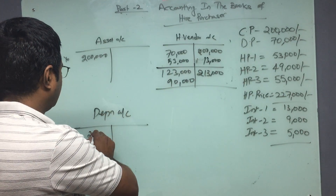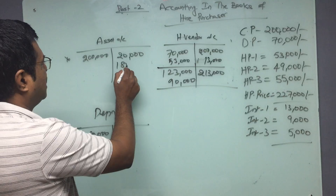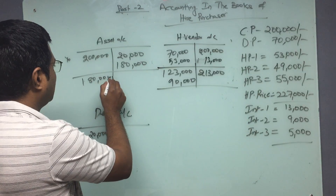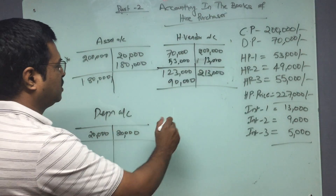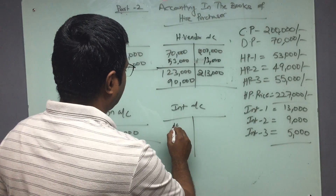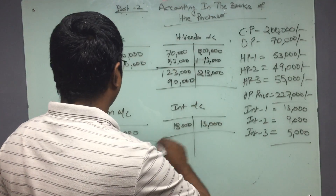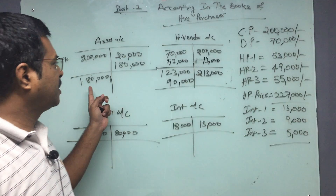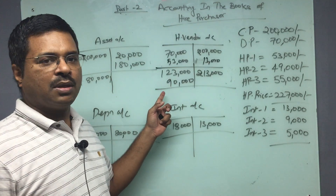Coming to the depreciation account: debit 20,000 to the asset account, so my closing balance at year end is 1,80,000, which will be carried forward. Depreciation will be debited to P&L and this nullifies the account. Interest account: debit 13,000 and transfer to P&L — this becomes zero. Depreciation becomes zero. My asset balance after depreciation remains at 1,80,000 at the beginning of the second year, and my liability to the vendor remains at 90,000.